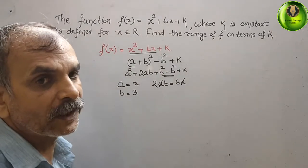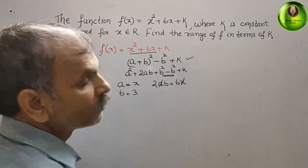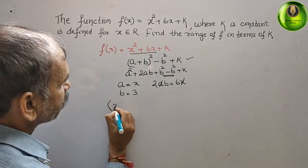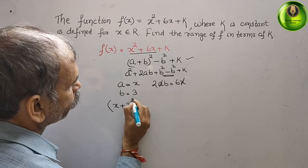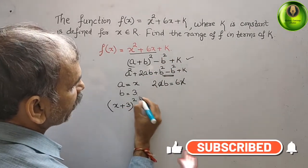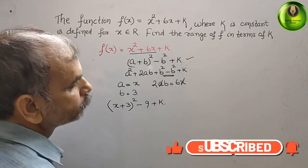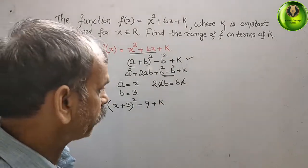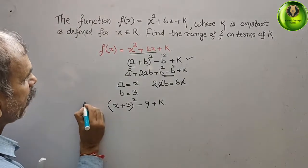Substituting b = 3 into the equation gives us f(x) = (x + 3)² − b², which means (x + 3)² − 9 + k. So this is your f(x) in completed square form.